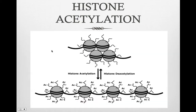Another way that cells regulate gene expression is histone acetylation. An acetyl group, which is COCH3, attaches to lysines, which are amino acids, in the histone tails. This causes the histone to bond less tightly to the DNA. So transcription enzymes enter more easily and transcription increases.